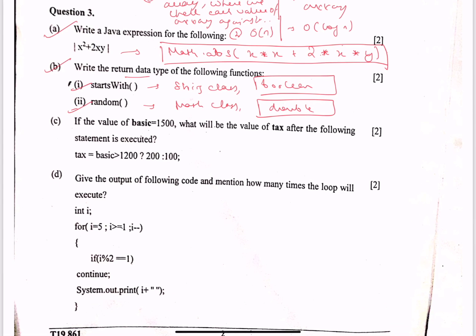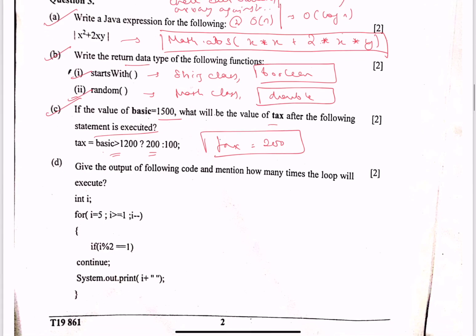Part C: if the value of basic is 1500, what will be the value of tax? This is a ternary operator. If basic is greater than 1200, tax is 200; otherwise 50; otherwise 100. Since basic is 1500 and 1500 is greater than 1200, this condition is true, so tax is equal to 200.